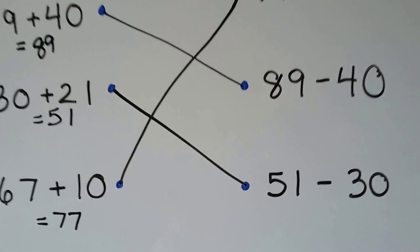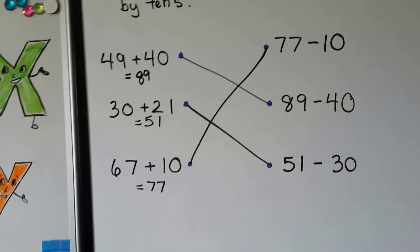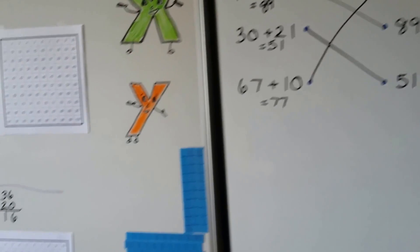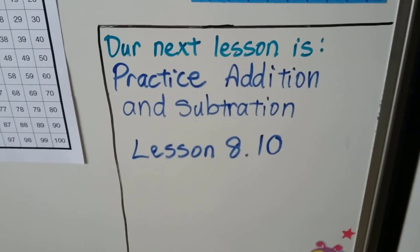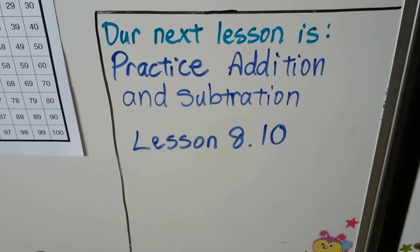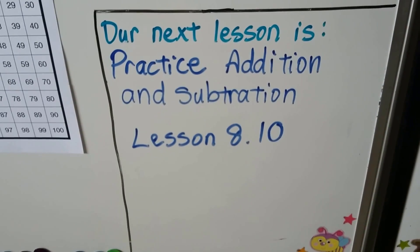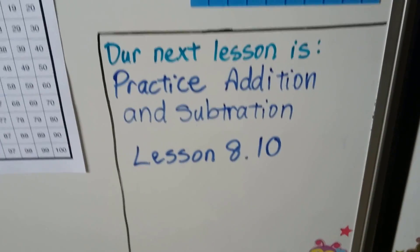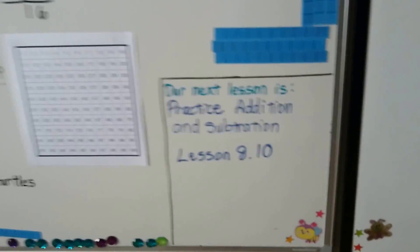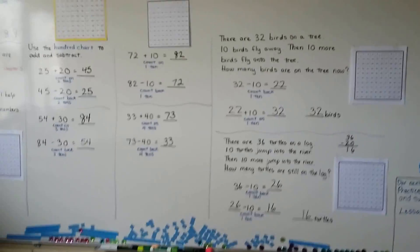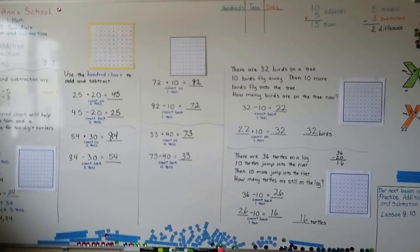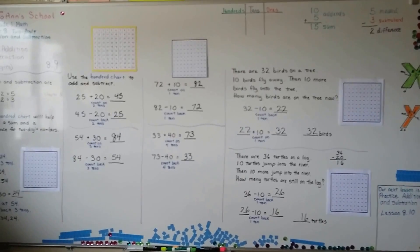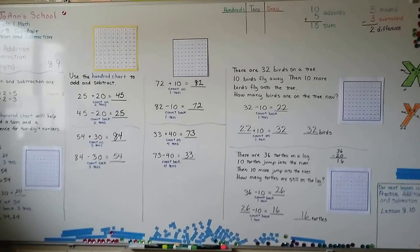So we can have related facts with two-digit numbers, just like we had related facts with one-digit numbers. Our next lesson is practice addition and subtraction — that's lesson 8.10, the last lesson for Chapter 8 before we move on to measurement. Keep practicing your addition and subtraction facts, and have a wonderful day. I'll see you next time!